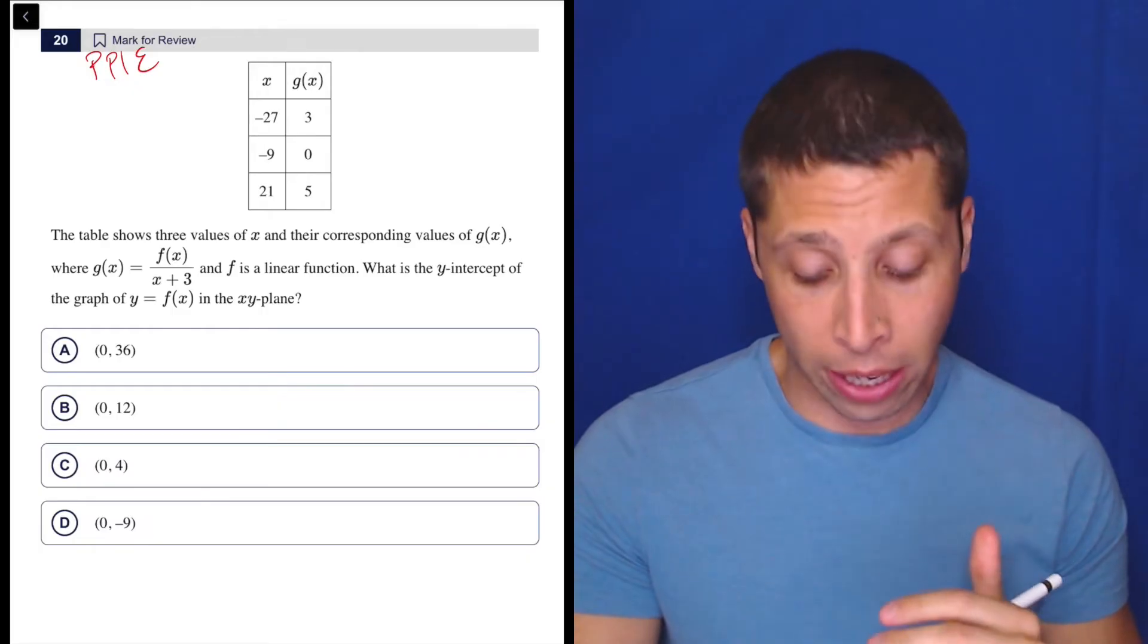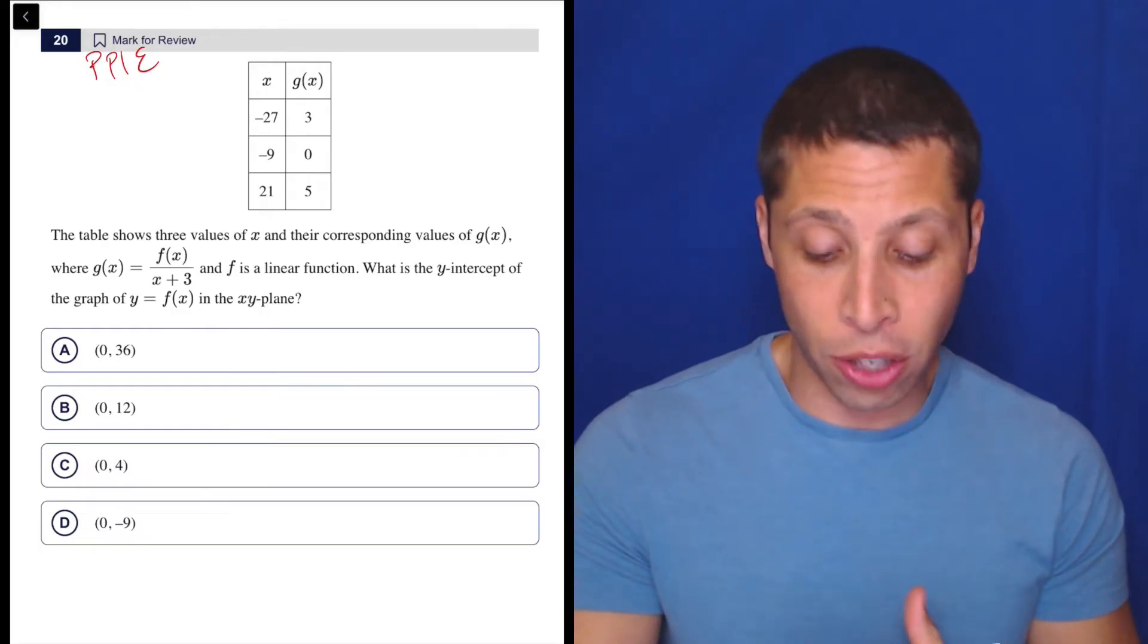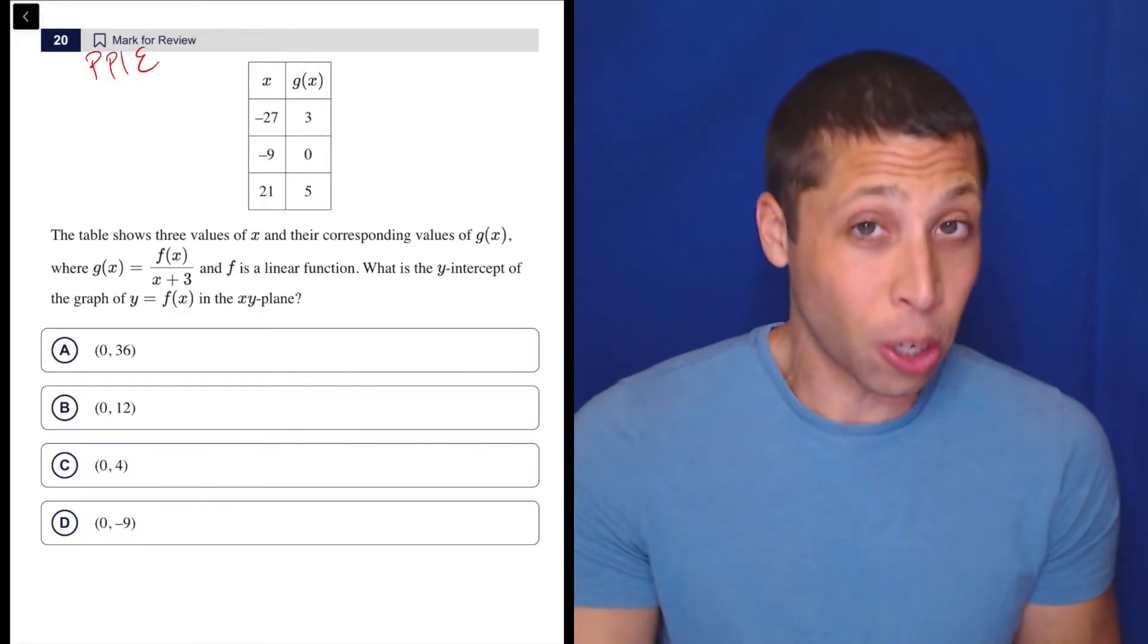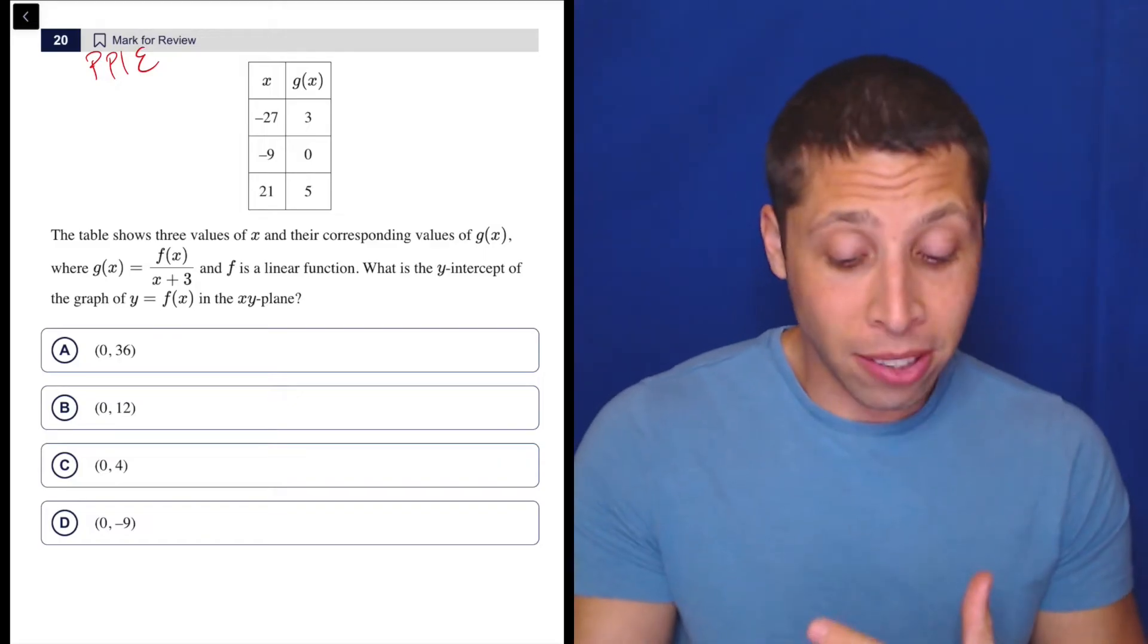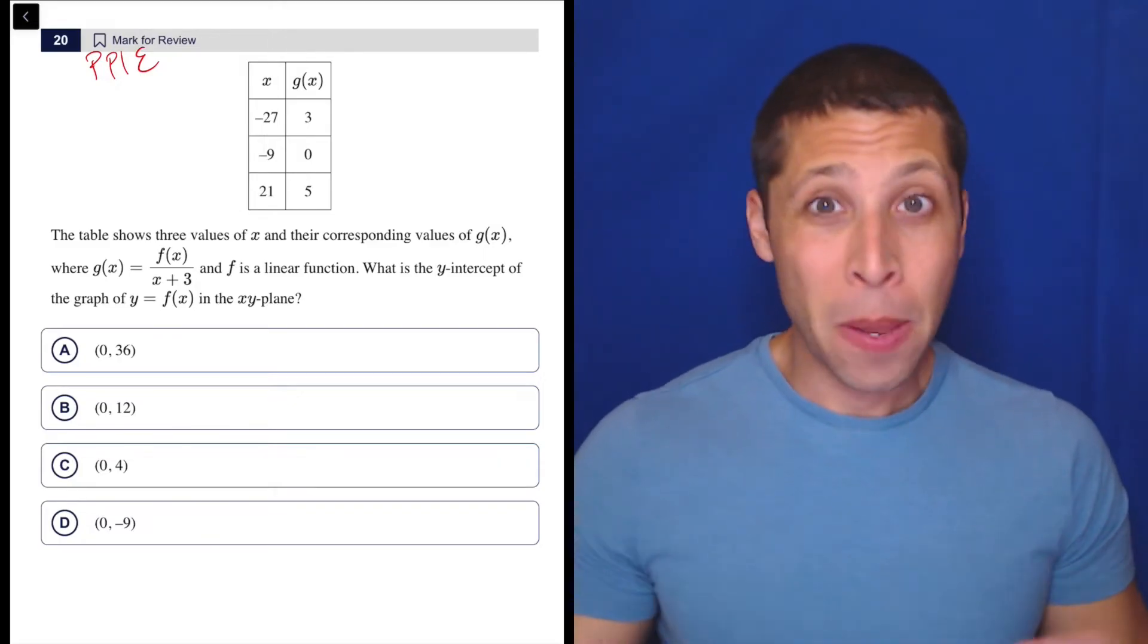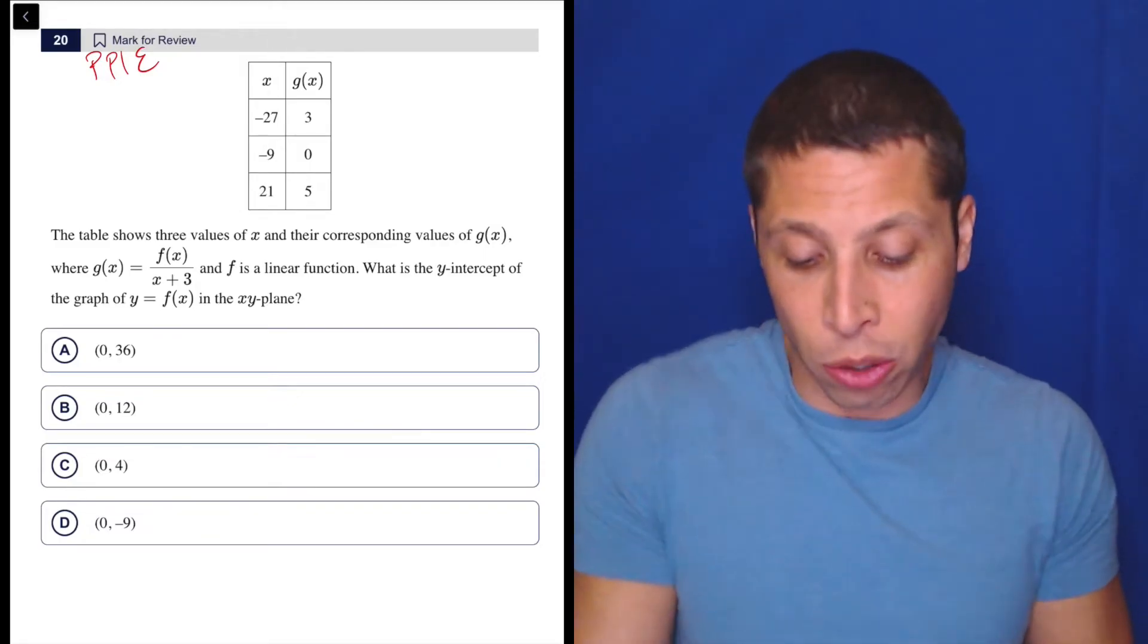I'm gonna need to plug points into equations, that's my main strategy. Every time I see something new, I'm always thinking, do I have points, do I have equations? I definitely have points, that's what that chart is, and I definitely have equations. This g of x equals f of x over x plus three, that's an equation, so I can plug stuff in. It's messy, but it's something. It's just function notation.